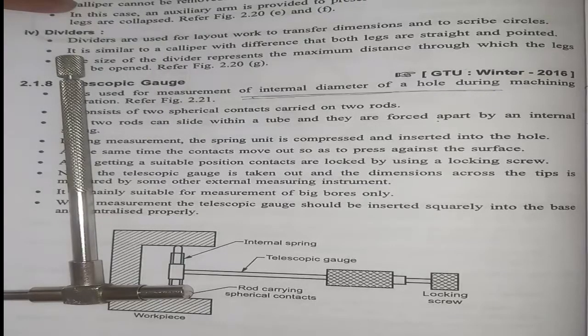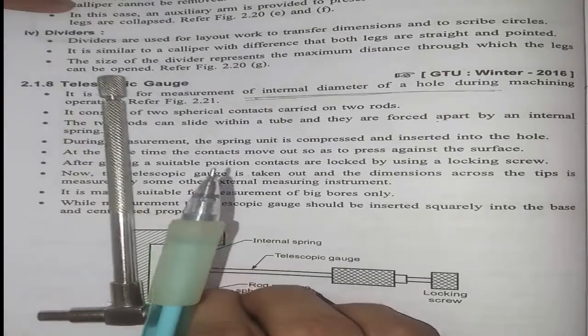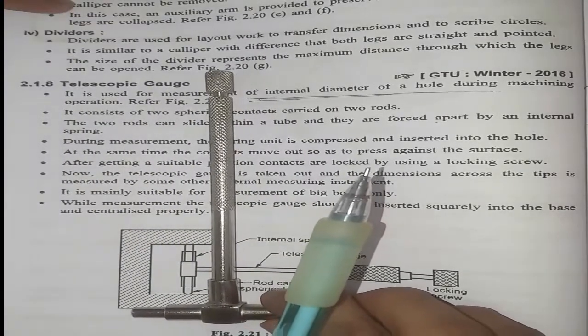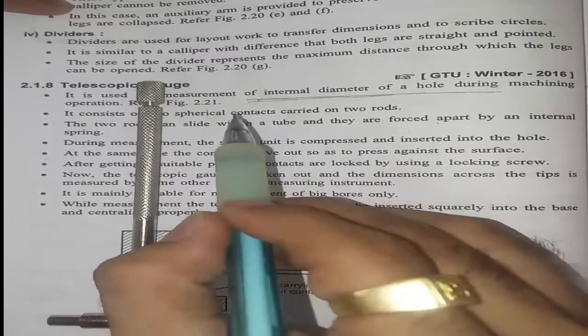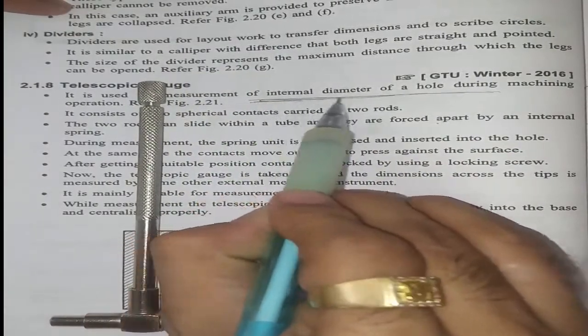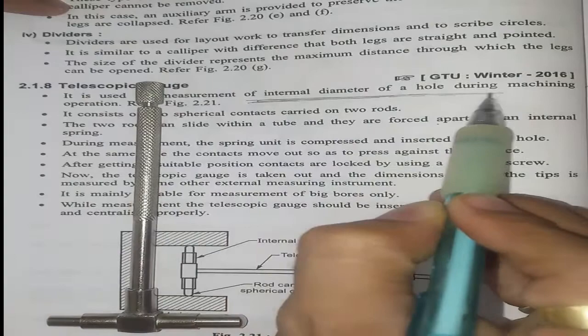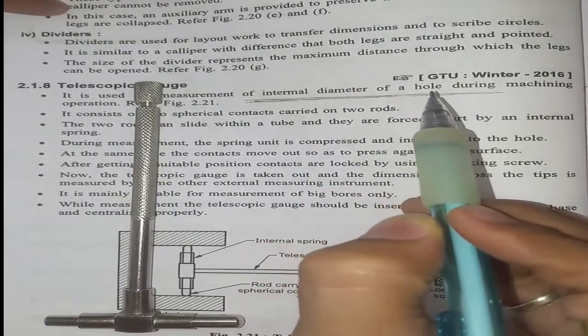Hello friends, welcome to MagnoTech YouTube channel. Our today's topic is telescopic gauge. The function of telescopic gauges is to measure internal diameter of holes during machining.